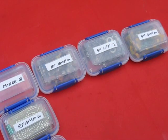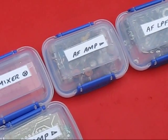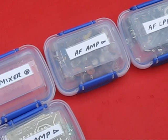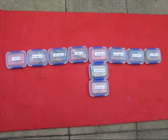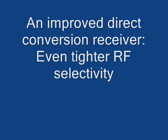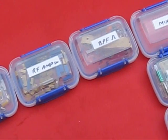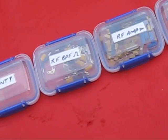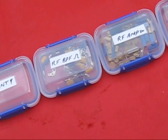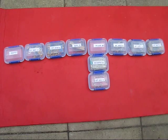Here's another audio amplifier placed between the mixer and the low-pass filter. That's a low-noise audio amplifier and it improves the receiver's sensitivity. Here's another bandpass filter between the receiver's radio frequency amplifier and its mixer stage. In conjunction with the front-end bandpass filter, that further tightens the receiver's selectivity and its ability to reject out-of-band signals.